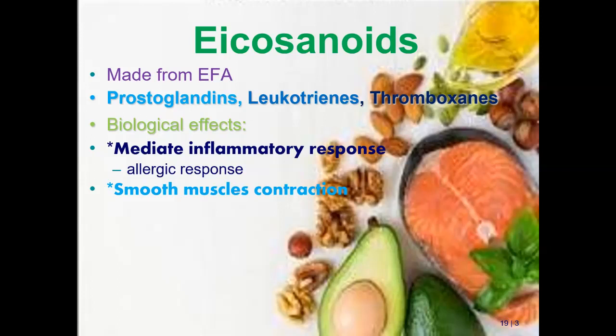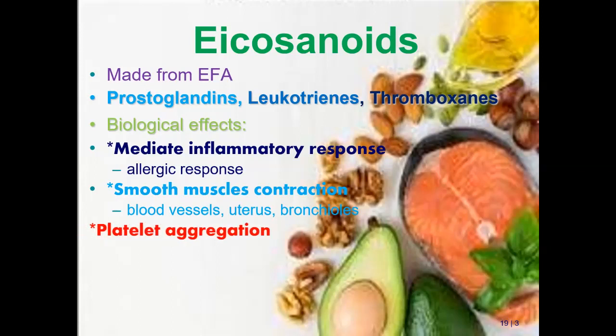The second major function of eicosanoids is regulating smooth muscle contractions. Skeletal muscles are your big voluntary muscles. Smooth muscles include blood vessels — which regulate blood pressure — the uterus (cramps, menstrual issues absolutely related to diet), and bronchioles (breathing tubes into the lungs). The intestines are also smooth muscles. The eicosanoids also regulate platelet aggregation — the key word is they mediate or regulate, keeping everything in balance.